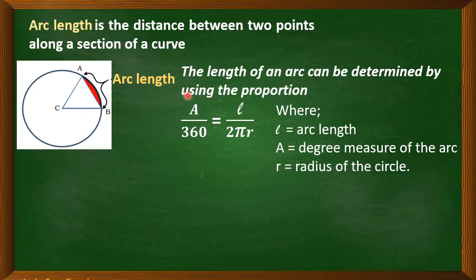Okay, with this proportion, we can actually shorten the solution. We can derive this proportion so we can have right away the formula in finding the arc length. So, once we multiply this or cross multiply,